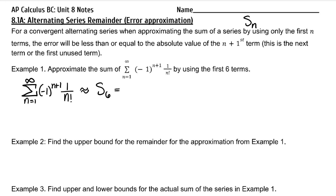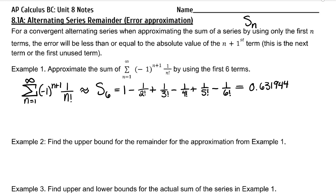By plugging in one, we will get one as our first term. When you plug in two, you get negative one over two factorial. The next will be positive one over three factorial, and this continues. Using a calculator to add these first six terms, I get 0.631944. That is the sixth partial sum approximating this series.